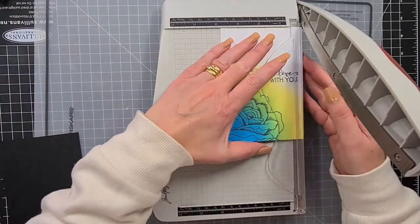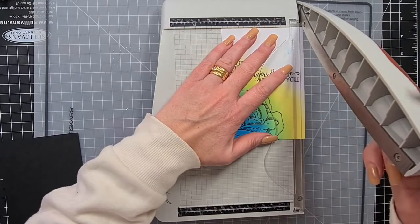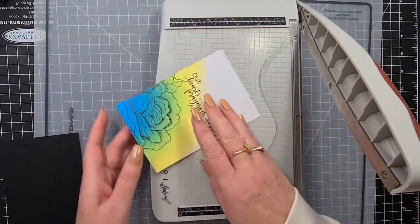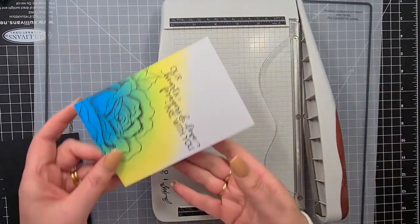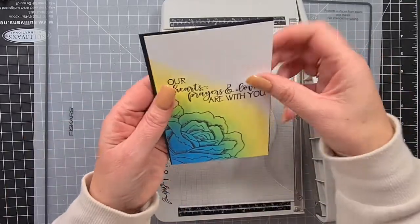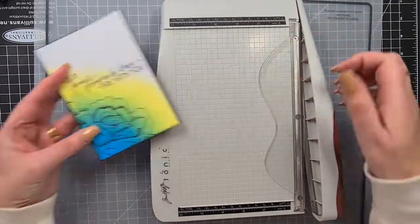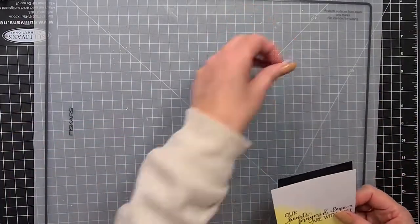I'm gonna trim this down to 14.1 by 9.7, which gives me a little sliver of a mat that I can put behind it, which is going to be black. I have dried this off. You do have to be careful with the Versafine Black Onyx—it can take quite a while to dry. Plus we've got our blending there as well, so everything is sitting on top.